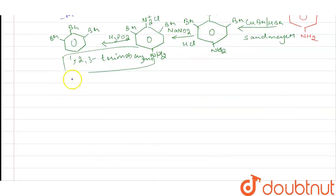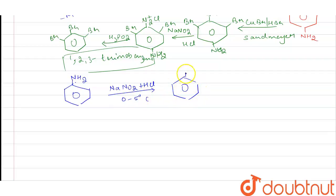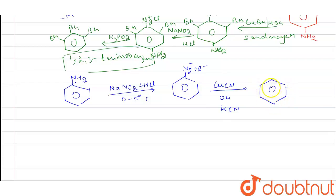Our second part is converting aniline to benzylamine. We again perform a diazotization reaction — reaction of aniline with NaNO₂ plus HCl at low temperature, 0 to 5°C — to get our diazonium salt: N₂⁺ Cl⁻.